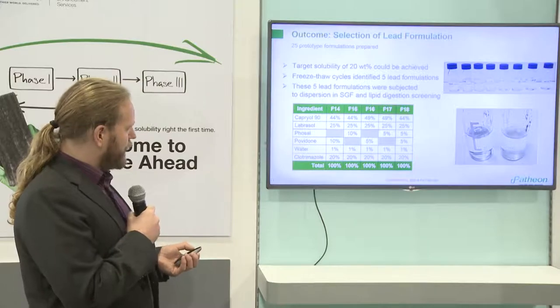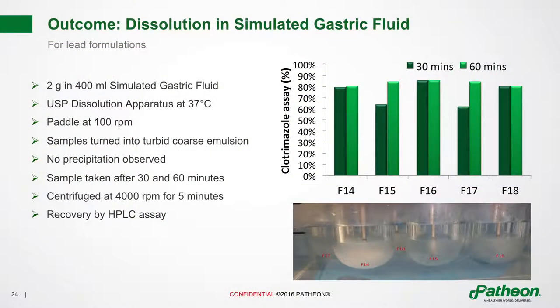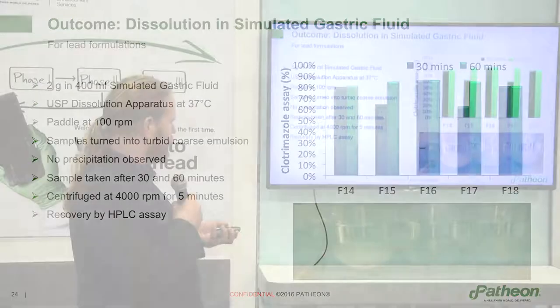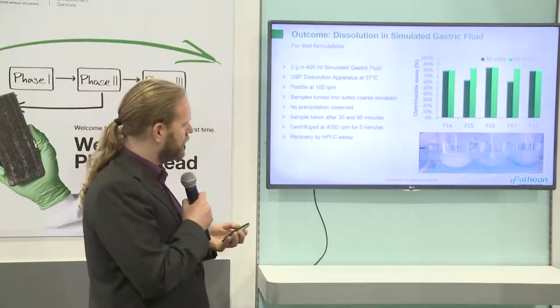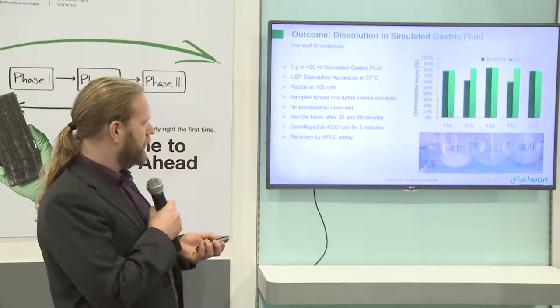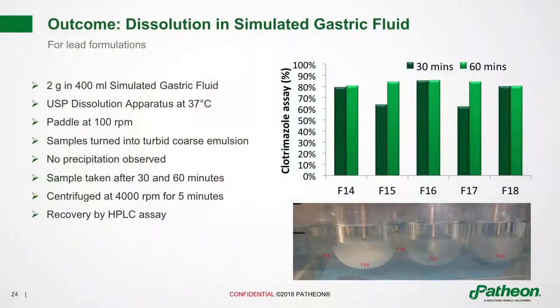These five lead formulations were further progressed. In the first test we did a dissolution in simulated gastric fluid in a USP type 2 dissolution bath — 2 grams in 400 milliliters, at 37°C, stirring at 100 rpm. We observed that a turbid coarse emulsion is formed, we see no precipitation, and samples taken after 30 and 60 minutes show a recovery of clotrimazole in the aqueous phase after centrifugation of about 80%, which is actually fairly good. That means this formulation has the properties to keep the drug suspended and emulsified in gastric fluids.